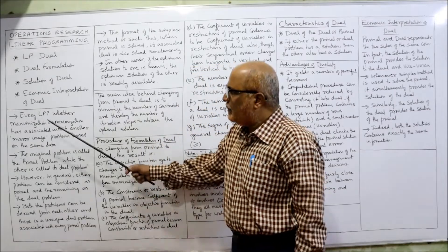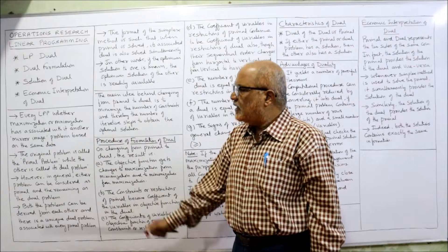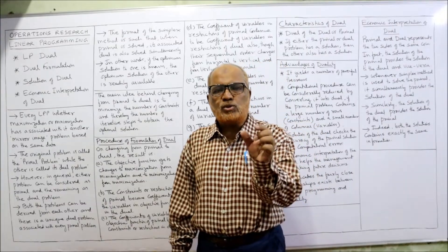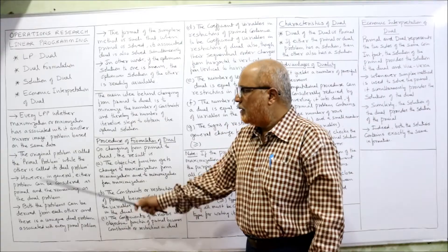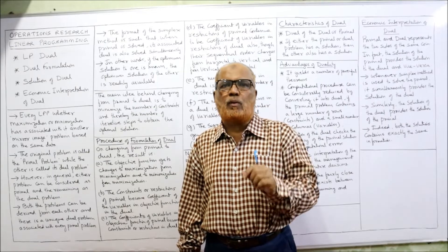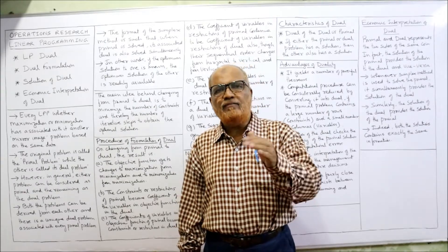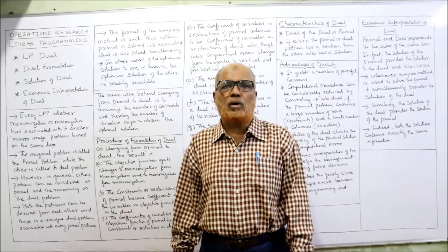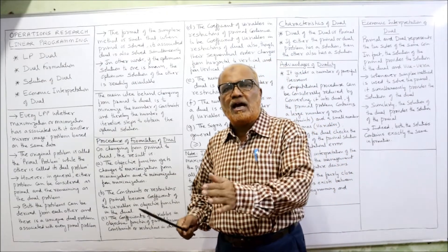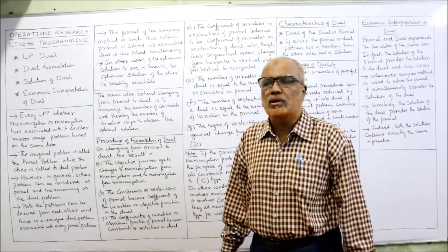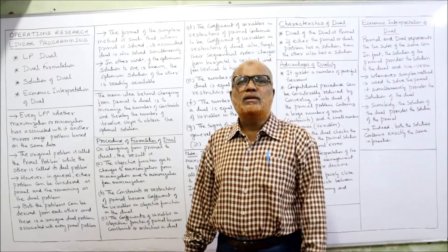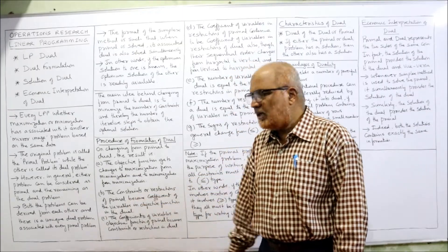First, we'll try to understand the meaning of the term dual. Every linear programming problem, whether it is a maximization or minimization problem, has associated with it a mirror image problem based on the same data. From the same data we can derive an image problem — that image problem is called the dual problem. The original problem is called the primal and the image problem is called the dual problem.